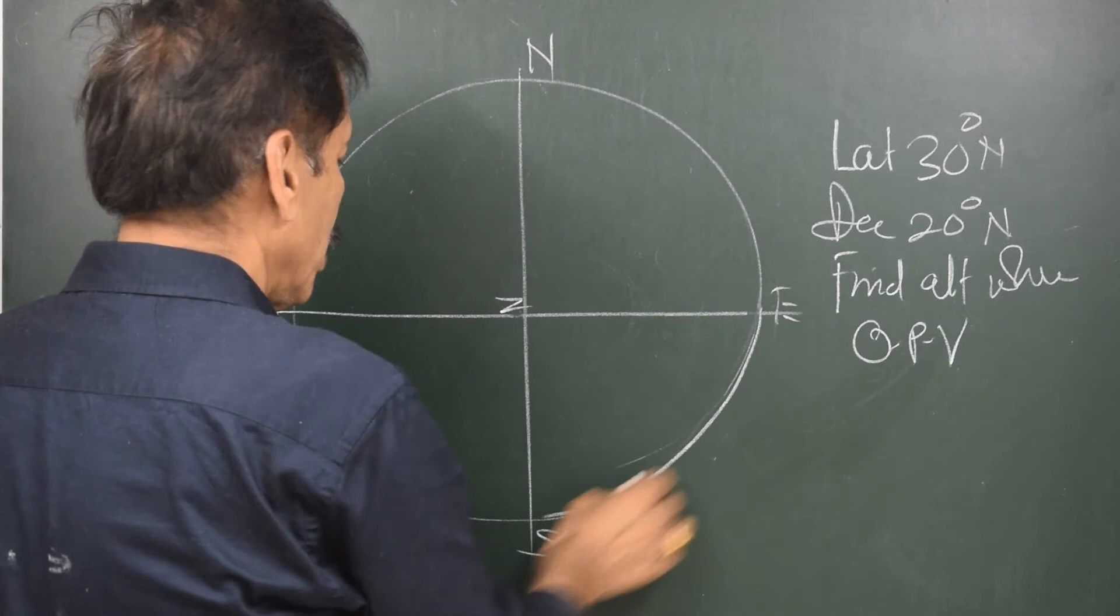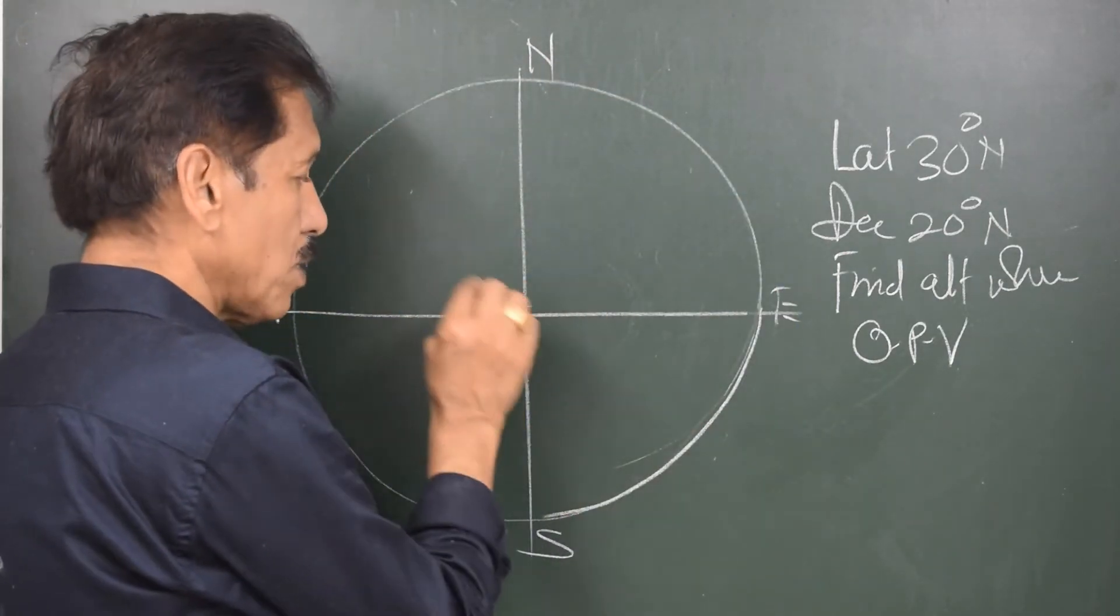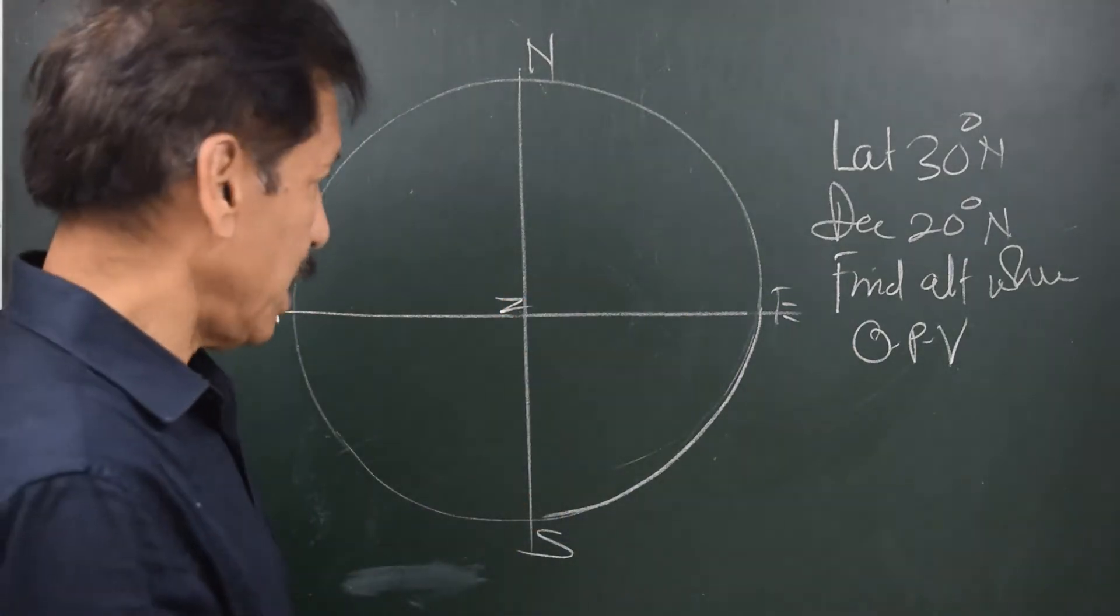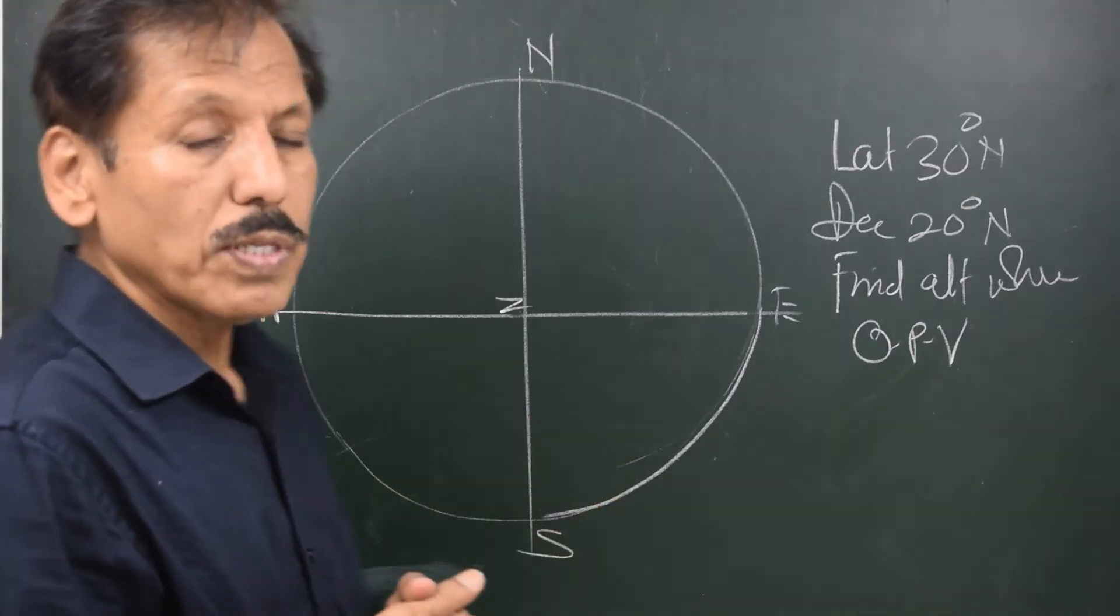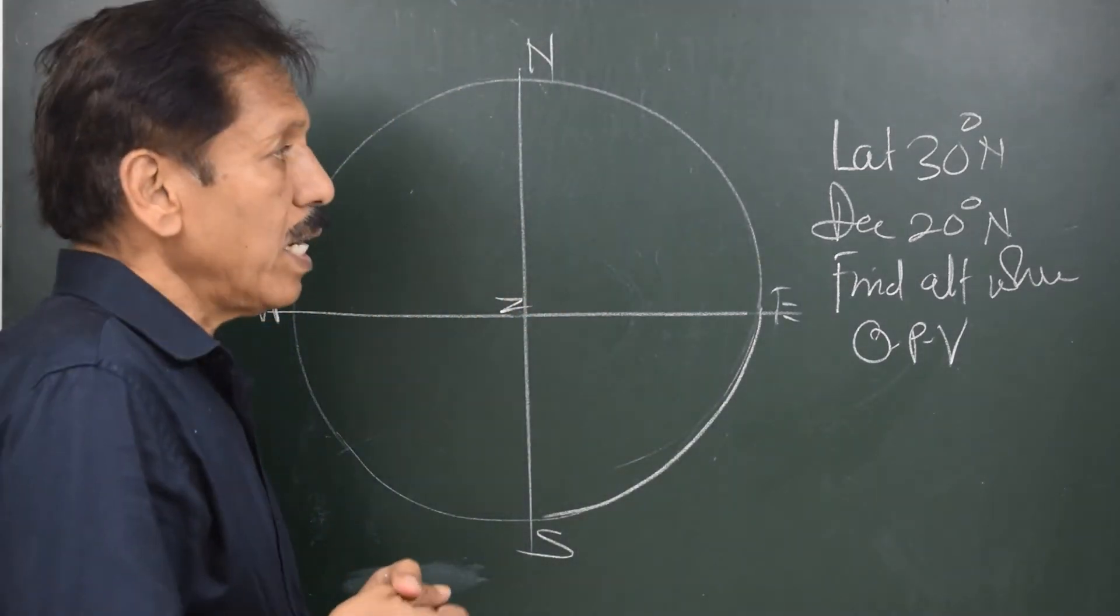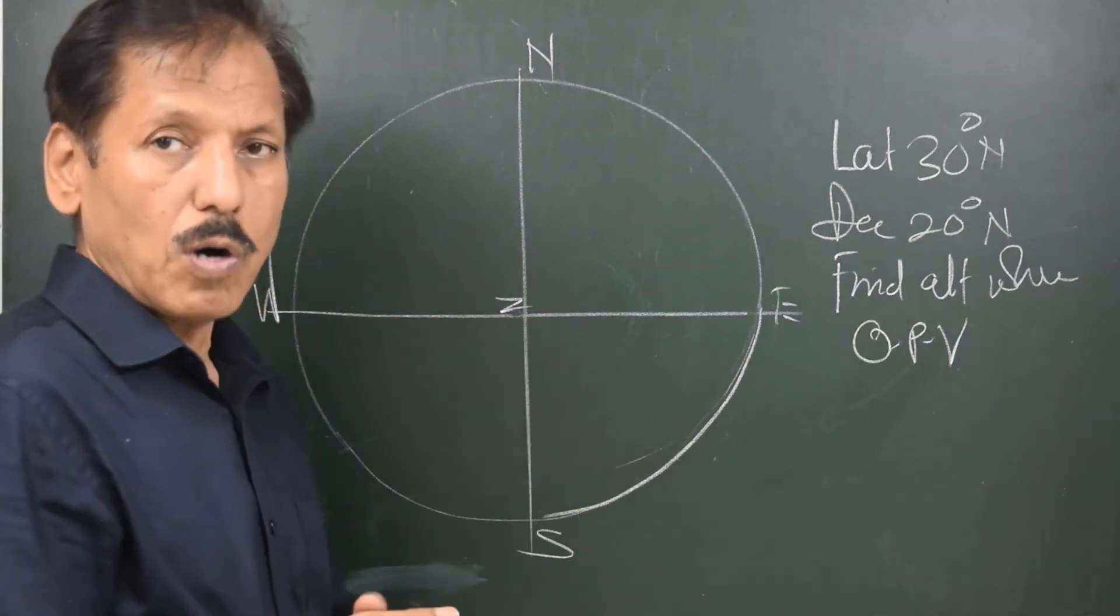So this is a zero altitude line or circle and this is 90 degrees altitude. That means from here to here, the change of altitude is by 90 degrees. After having drawn the circle and dividing it in 4 parts,